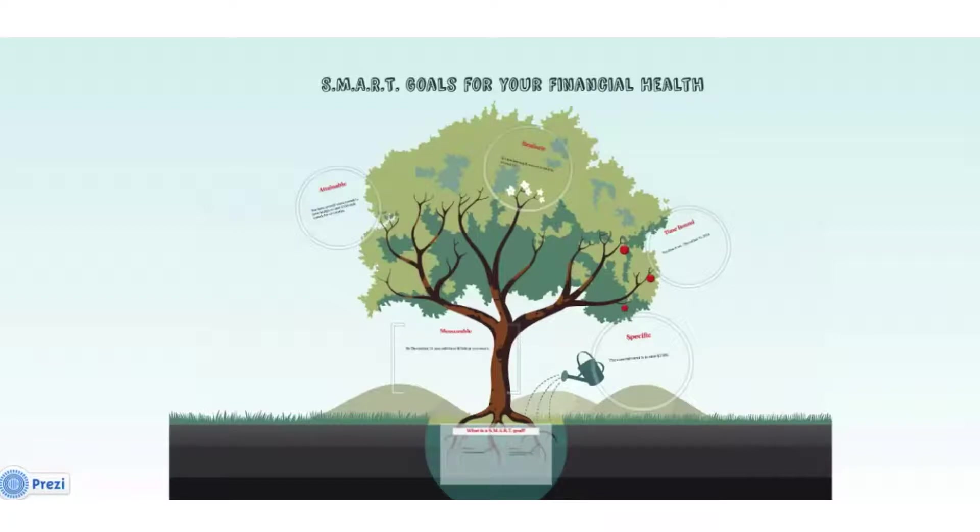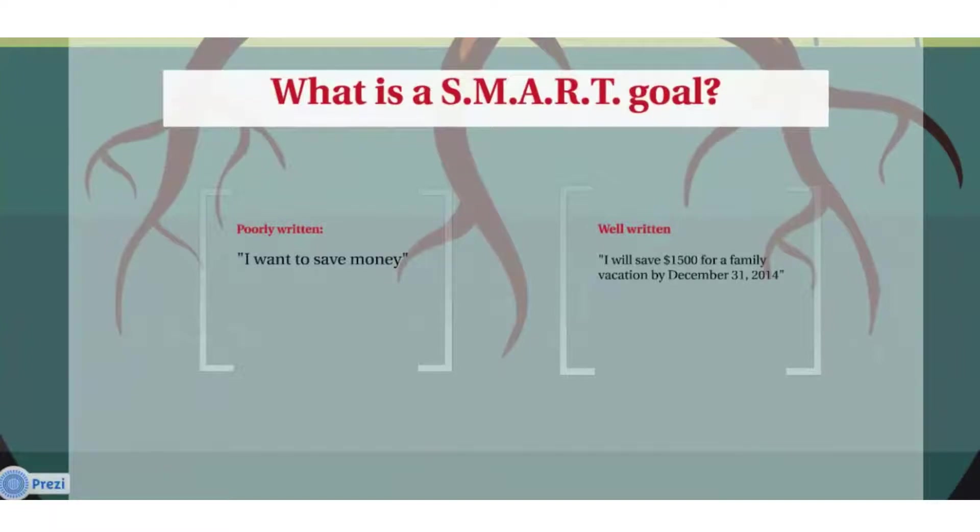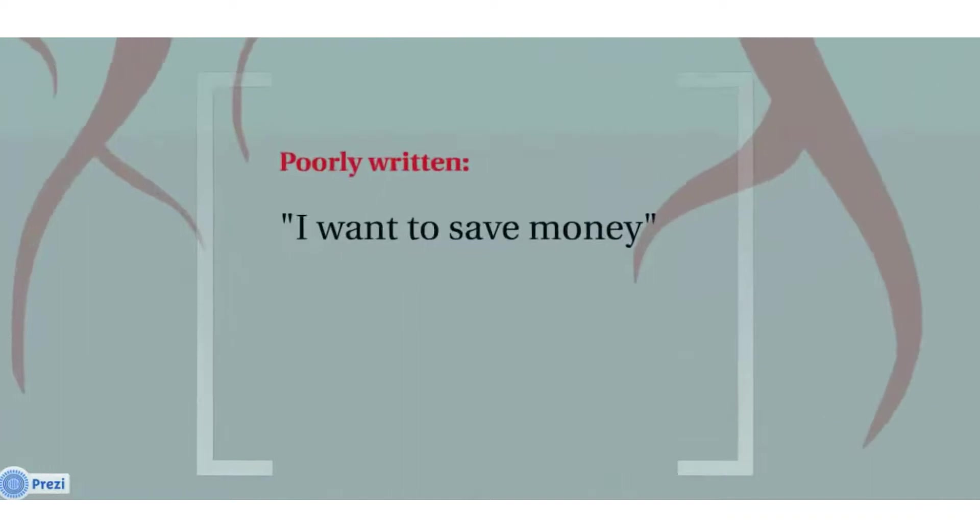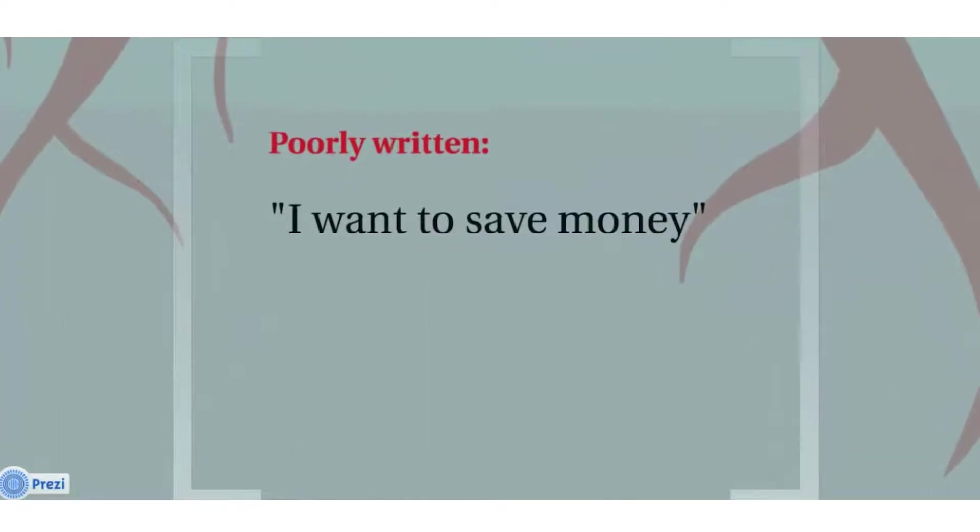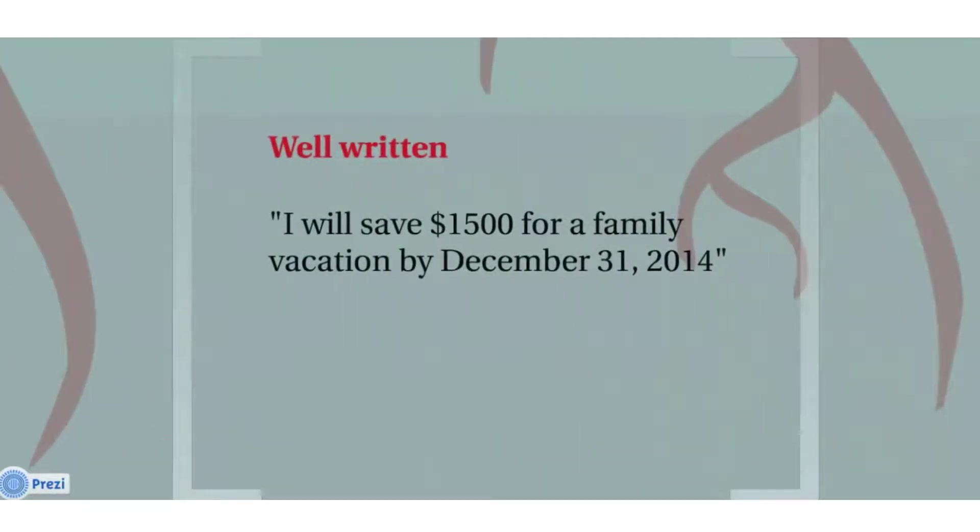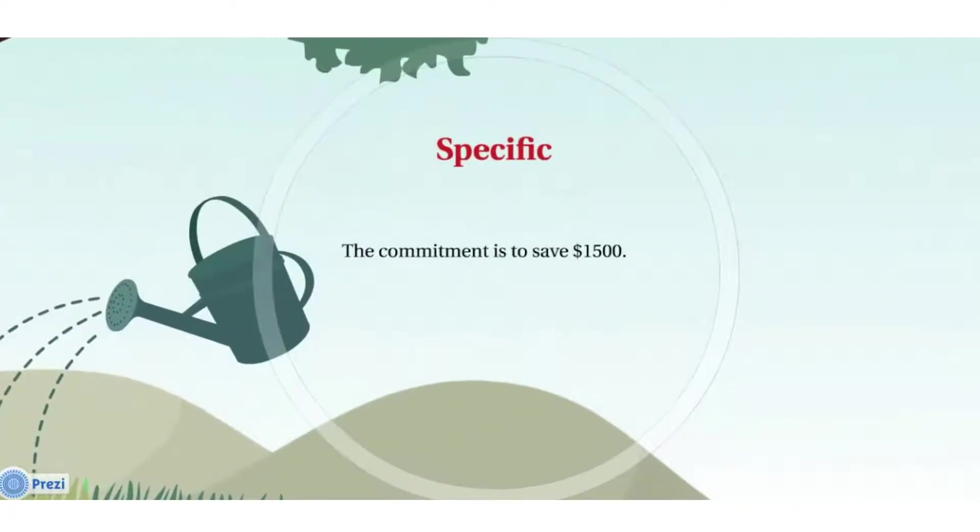This is Wanda Roberts with Michigan State University Extension. And today we're going to talk about SMART goals. SMART stands for specific, measurable, attainable, realistic, and time-bound. So when we think about writing a goal, particularly about our money, we might say, I want to save money. Well, that sounds okay. But to be more specific, I will save $1,500 for a family vacation by December 31st. That's pretty specific. The commitment is to save $1,500.